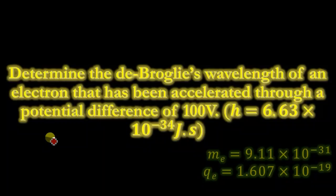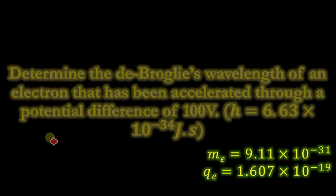Determine the de Broglie wavelength of an electron that has been accelerated through a potential difference of 100 volts. The Planck's constant h = 6.63 × 10^-34 joules·second, the mass of electron is 9.11 × 10^-31, and the charge on the electron is 1.607 × 10^-19.